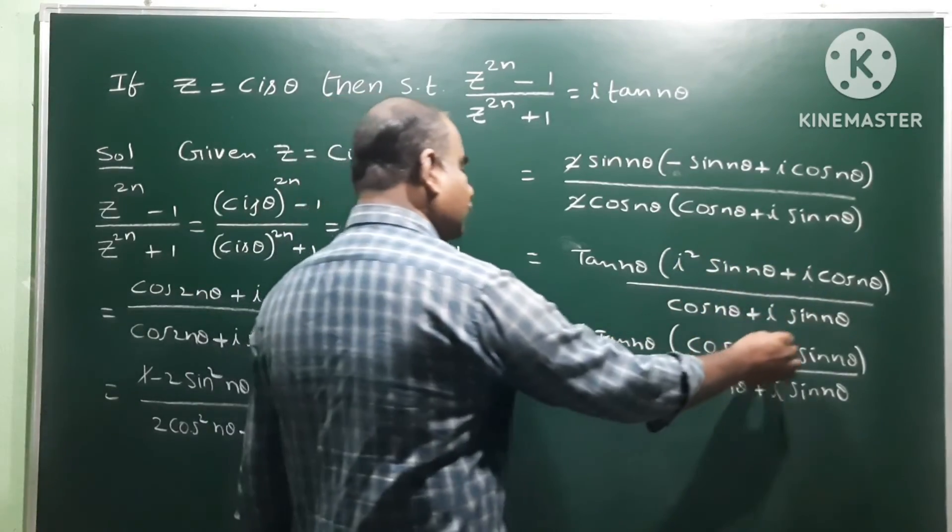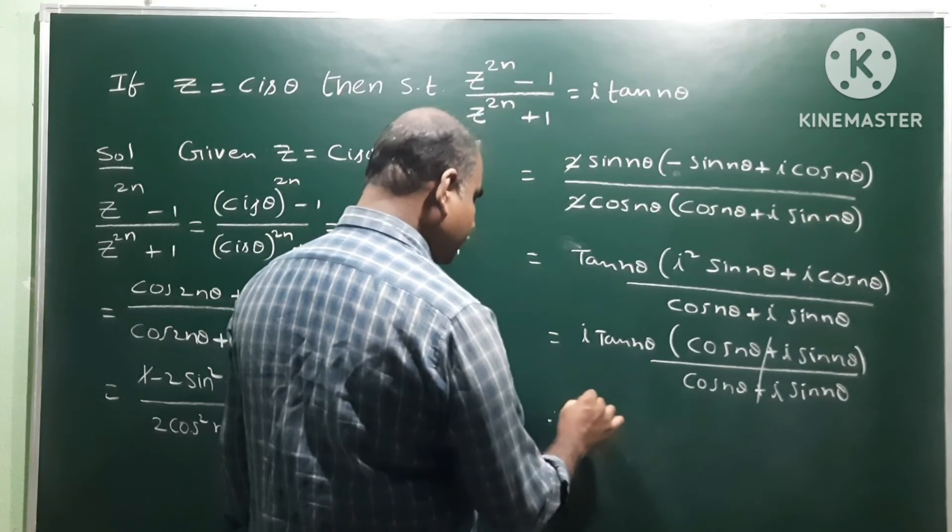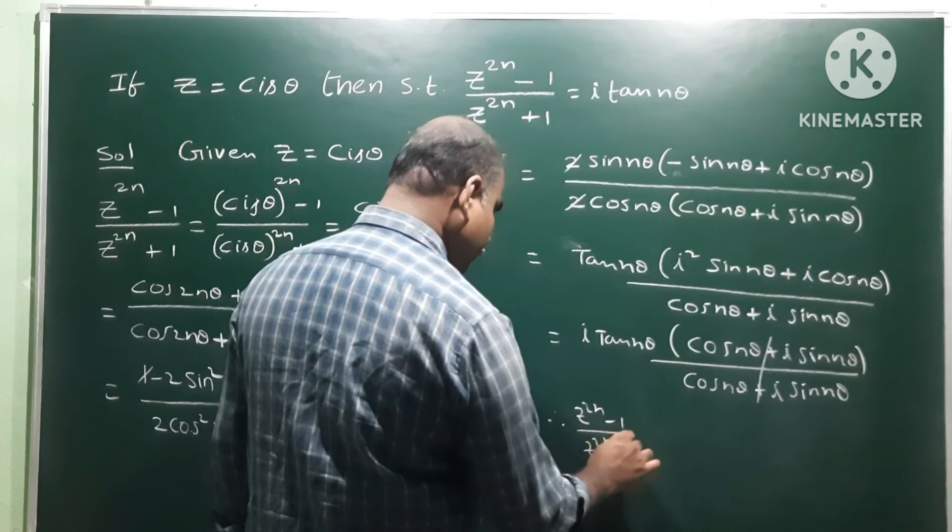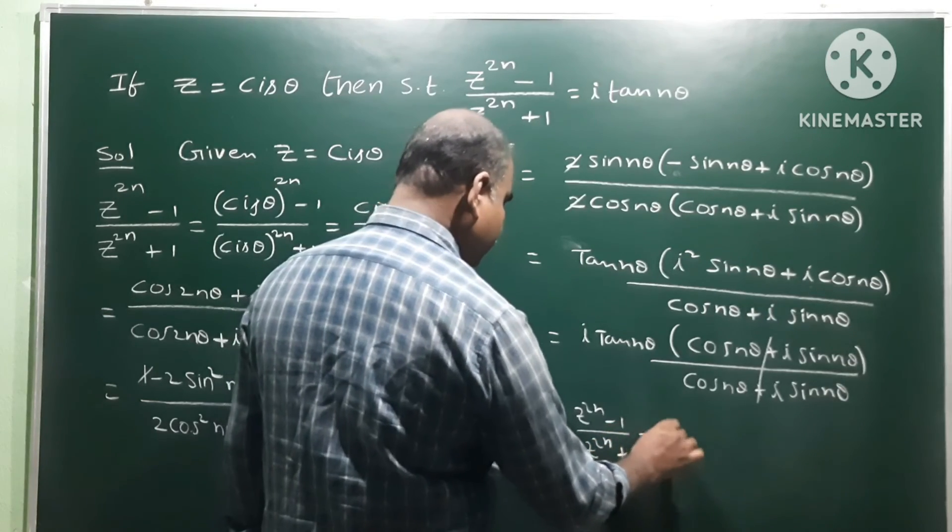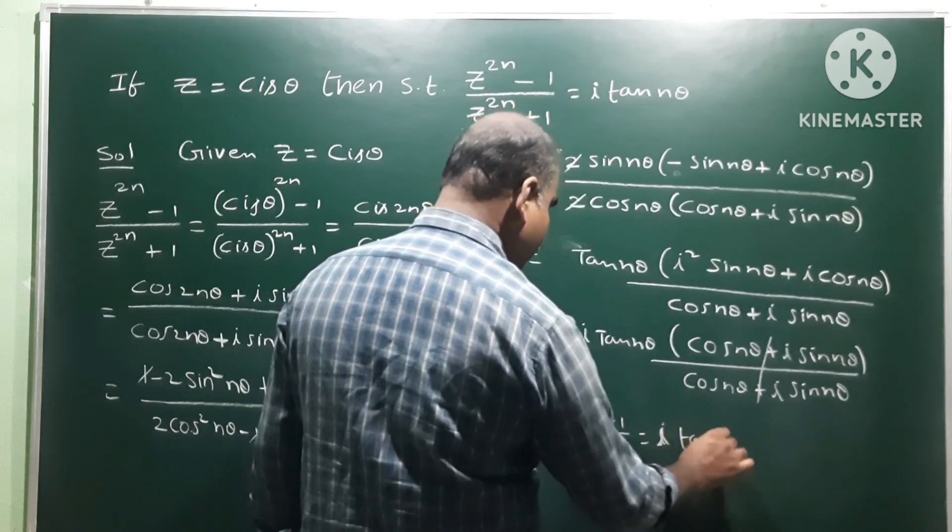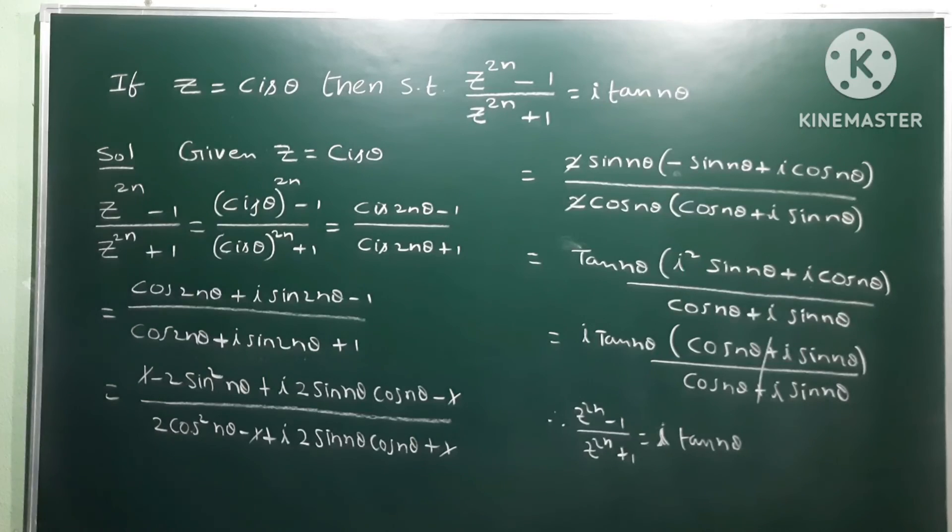Therefore, finally, we get z power 2n minus 1 by z power 2n plus 1 is equal to i tan nθ. That is the answer.